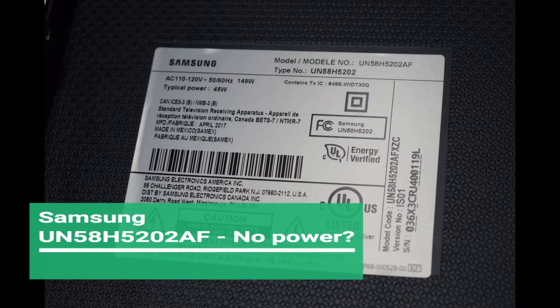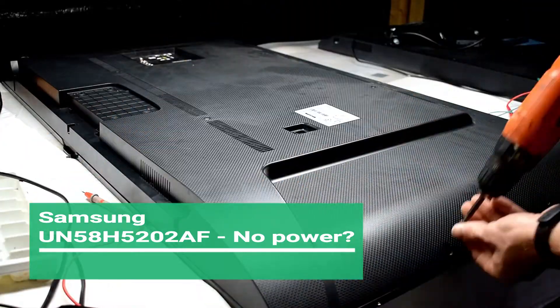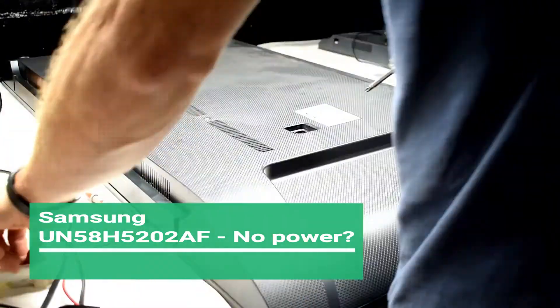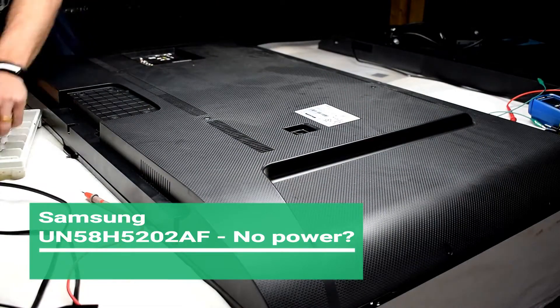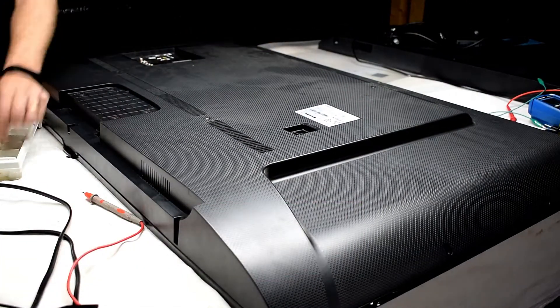This is a Samsung TV that has no power at all. The model number is UN58H5202 and the way to fix this TV is to deal with the power supply board.